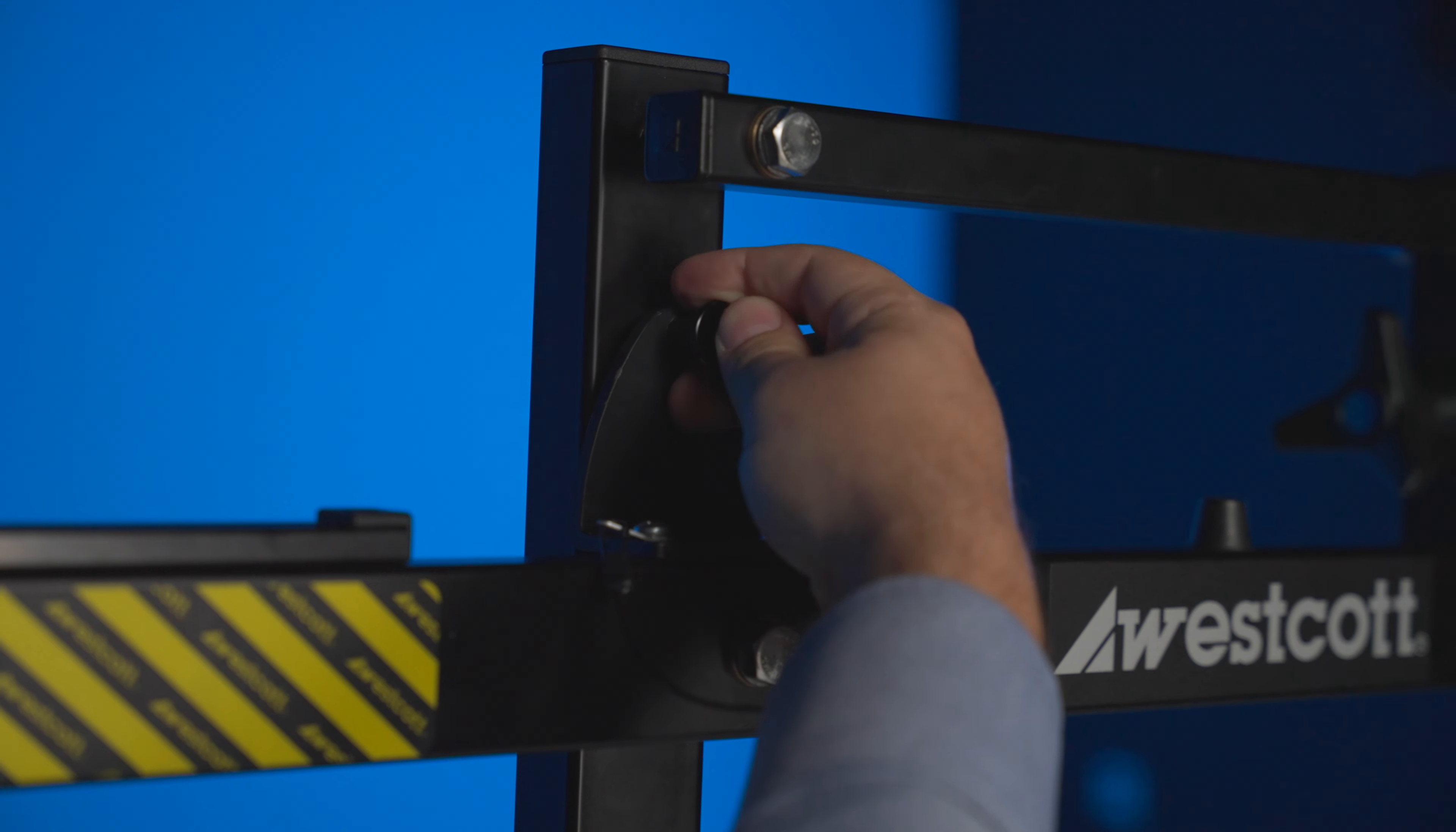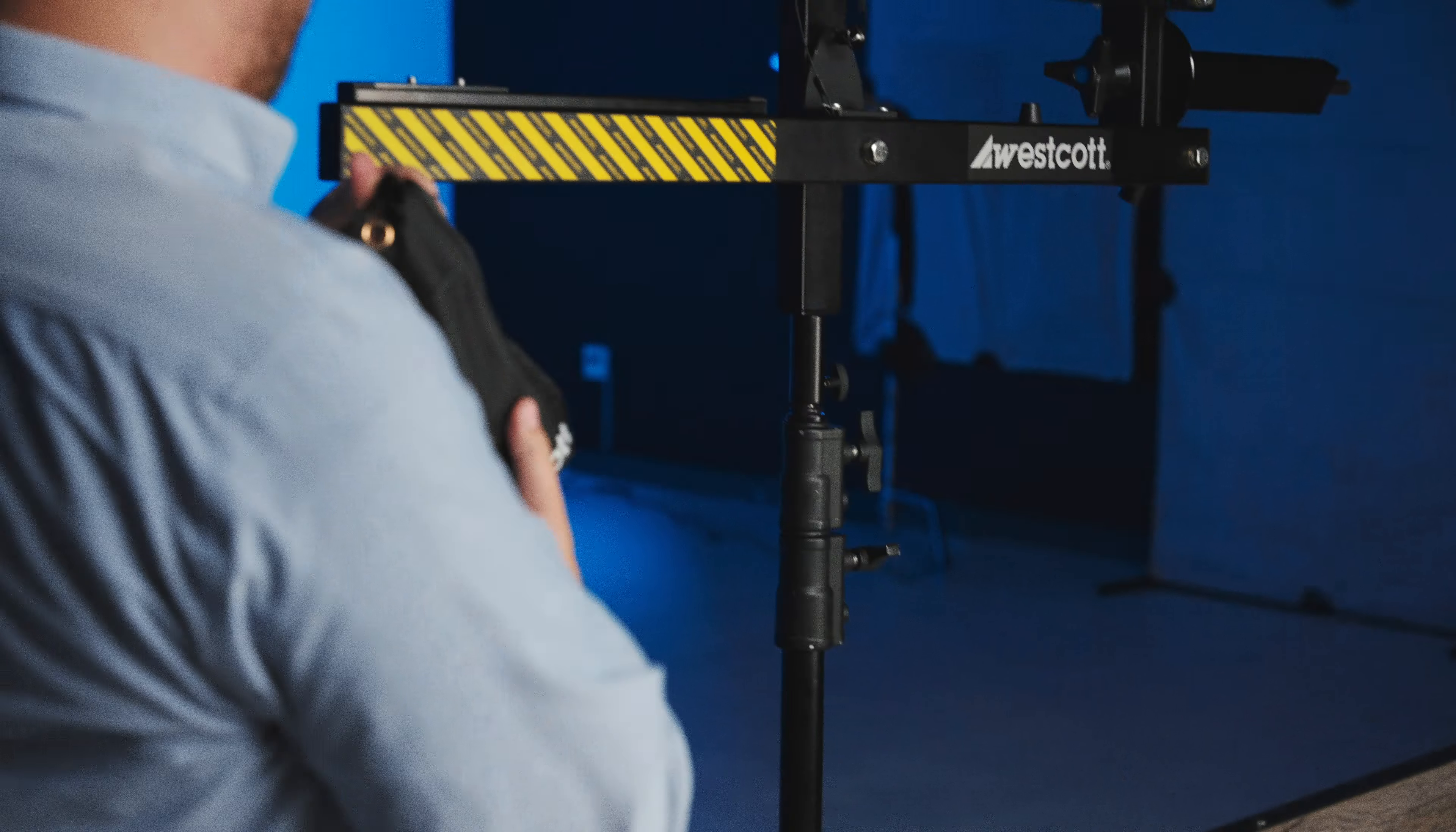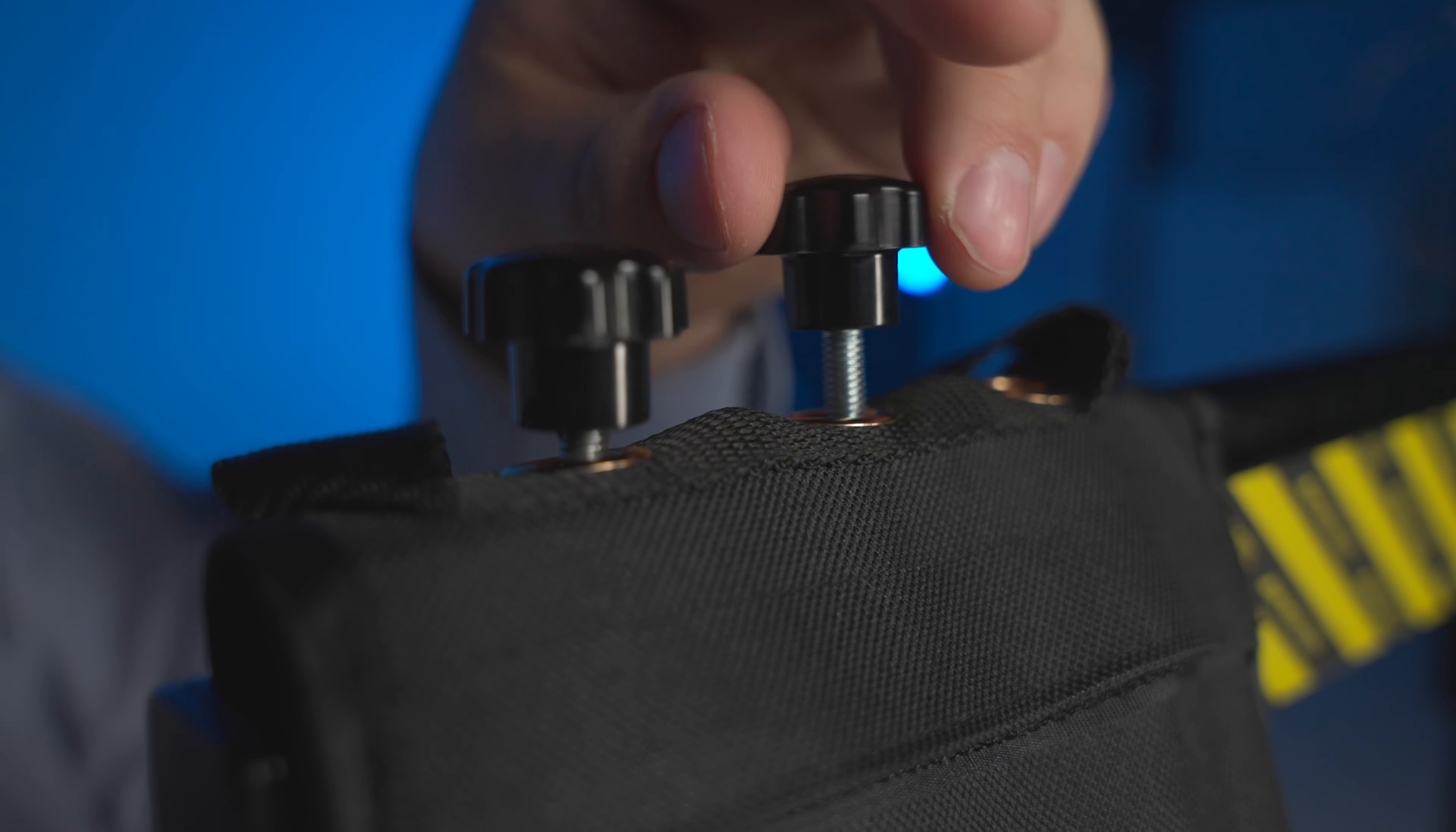Verify the EZBoom is in the horizontal position and its locking pin is securely installed. Slide the counterbalance track runner to the end of the track furthest from the center column. Align the rivets at the top of the weight back with the three thumb screw holes on the counterbalance track runner. Secure the weight back to the counterbalance track by inserting the three thumb screws into place. Do not over tighten.